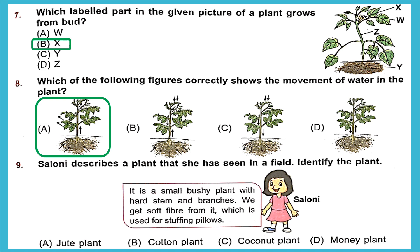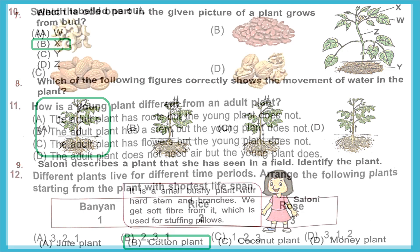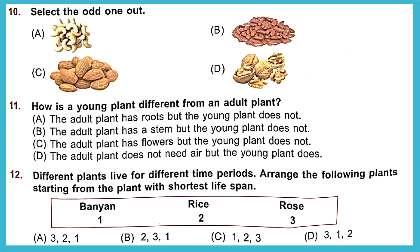Question 9: Saloni describes a plant she has seen in a field — identify it. It is a small bushy plant with a hard stem and branches; we get soft fiber from it used for stuffing pillows. That is cotton, and the cotton plant is also a shrub — everything matches. Option B is the right answer.